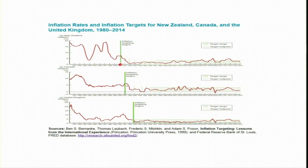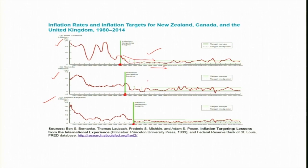Empirical evidence suggests that the New Zealand, Canada, and United Kingdom experiments with inflation targeting resulted in achieving the desired outcome. In a figure showing inflation rate on the y-axis and time period on the x-axis, the green line shows the target range and the red line shows the actual inflation rate. You can see that for New Zealand, Canada, and the UK, the inflation rate has been declining and they are having stable inflation after adopting the strategy of inflation targeting.